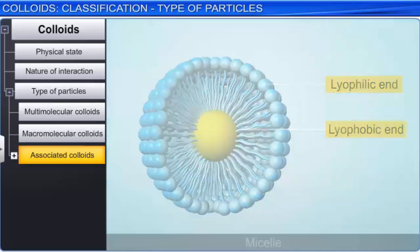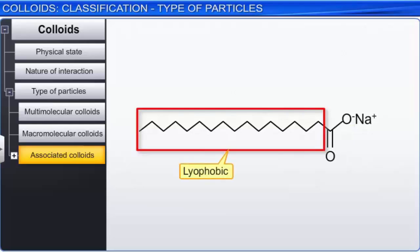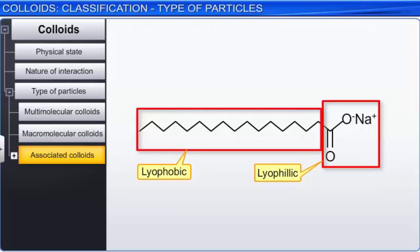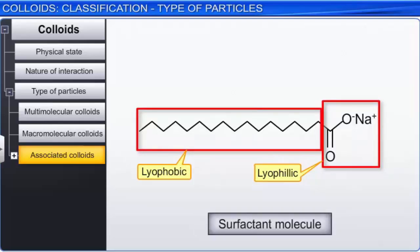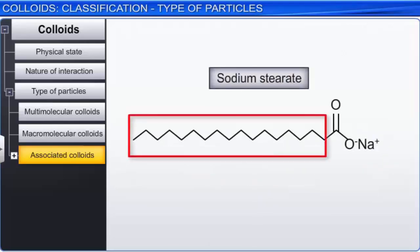Soaps consist of sodium or potassium salts of higher fatty acids and are represented as RCOO⁻Na⁺. In soaps, the alkyl group that consists of long carbon chains is lyophobic while the polar group is lyophilic in nature. Molecules with lyophilic and lyophobic ends are called surface active molecules or surfactant molecules.